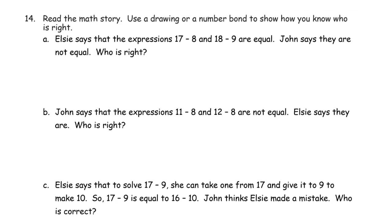Now reading a math story — we have to use a drawing or a number bond to show how you know who is right. So we see a lot of problems like this where somebody says one thing and somebody else disagrees, and we have to figure out and prove who is right. The hard part really is showing how you can tell which one is right. If you use a math drawing, you have to label it. Number bonds should also be labeled. Elsie says that the expressions 17 minus 8 and 18 minus 9 are equal. John says they are not equal. Who is right?